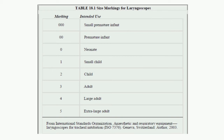There are various size markings for laryngoscopes for different populations. Size 00 is for small premature infants, double 0 for premature infants, and 0 for neonates. Size 1 is for small children, 2 for a child, size 3 for a normal adult, size 4 for a large adult, and size 5 for an extra large adult.